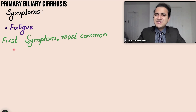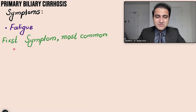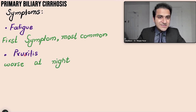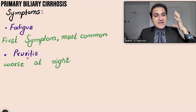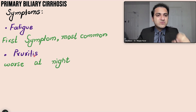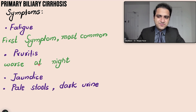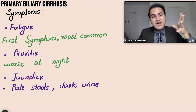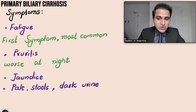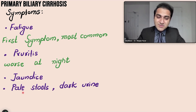Coming to the clinical presentation: fatigue is the first and most common symptom in females with PBC, though it is non-specific. Pruritus hints toward a cholestatic pattern — the itching occurs because bile deposits in the skin and is worse at night. Patients also develop jaundice because bile backs up instead of flowing to the intestine.